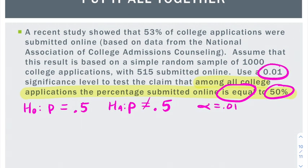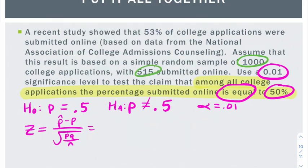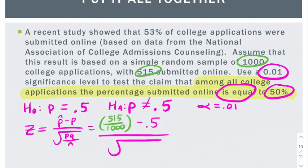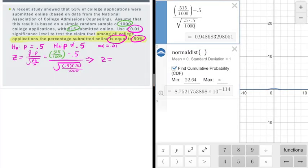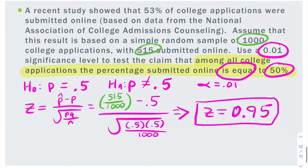Now I move on to my test statistic. My p-hat is always going to come from the sample data. We see out of a thousand applications, 515 were submitted online, so my p-hat is going to be 515 divided by a thousand. My p comes from my null hypothesis, 0.5. We write it again down here, and remember 1 minus 0.5 is also 0.5, so that's our q. And our n is that 1000 of our sample size. Now we go to decimals to find out this z, and this time I get a z of 0.95.